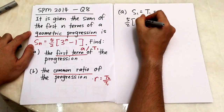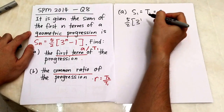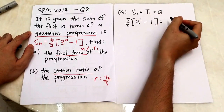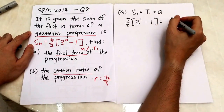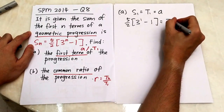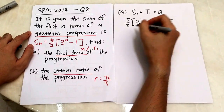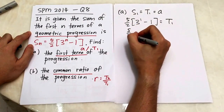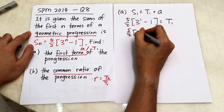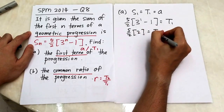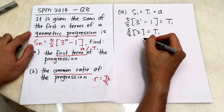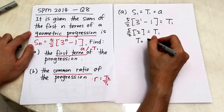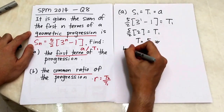Substituting n = 1 gives five over two times three to the power of zero, which equals five over two times two, so the first term is equal to five.